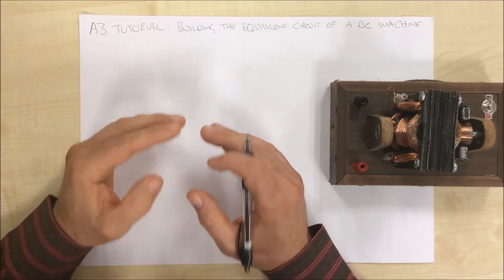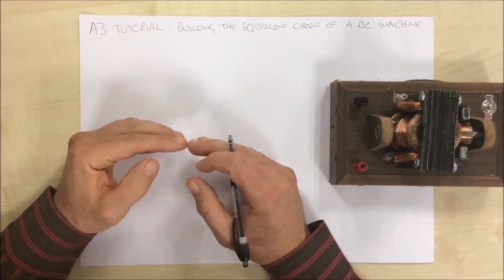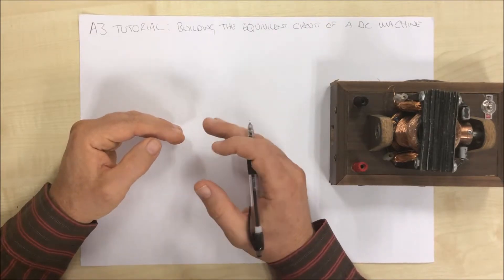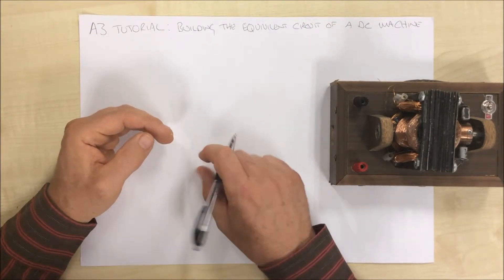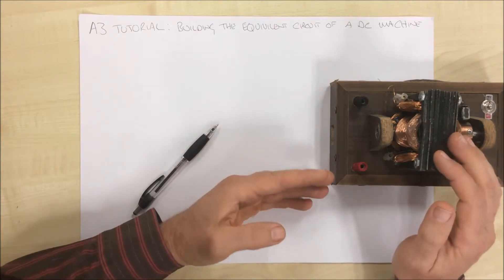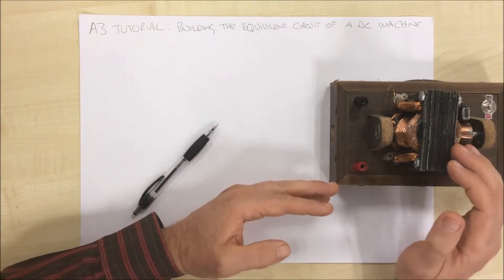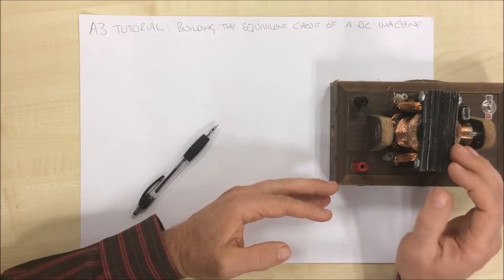So today we're just going to start with the very basics and build an equivalent circuit, and I'll be doing other A3 tutorials on other aspects of the DC machine. So here's a DC machine that one of my students has built. I've chosen this one because it shows very well what's going on.